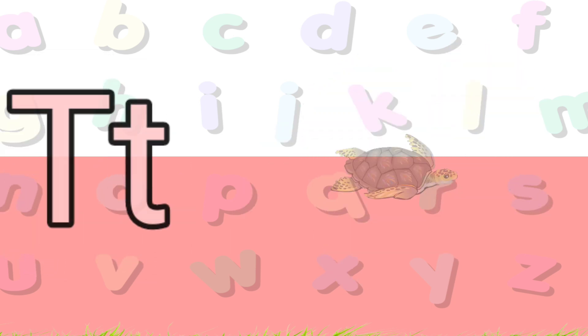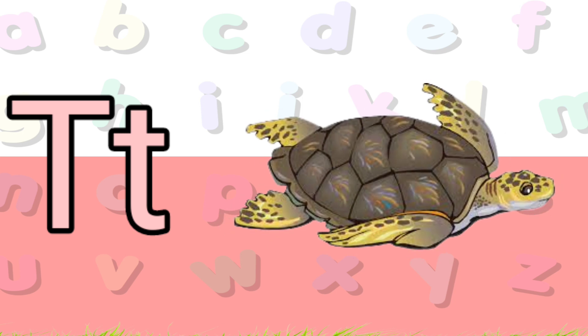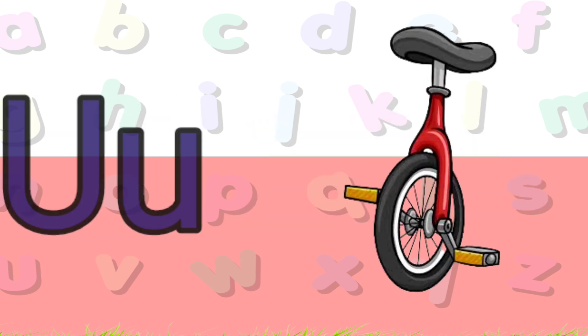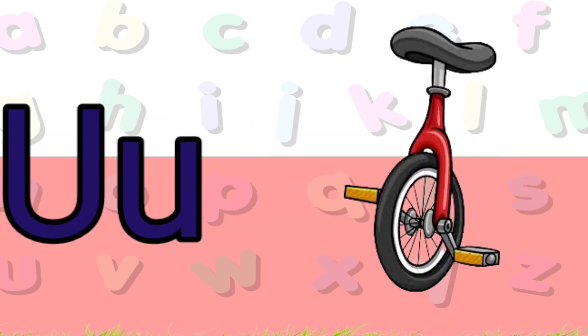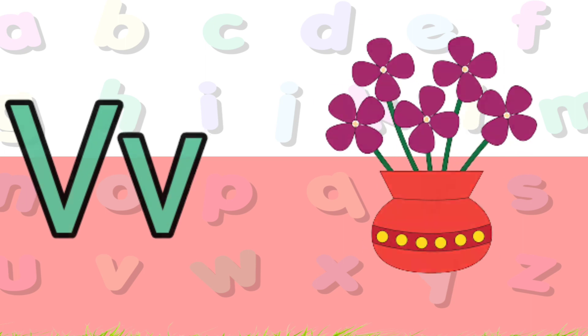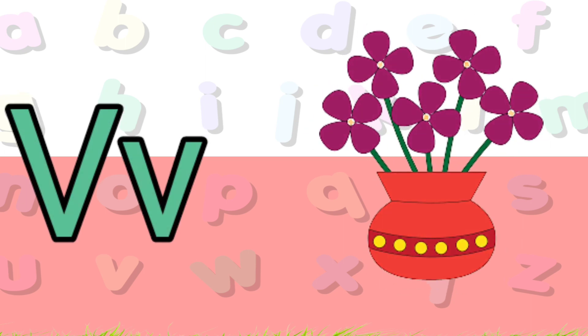S is for sleepers, P is for turtle, U is for unicycle, V is for vase.